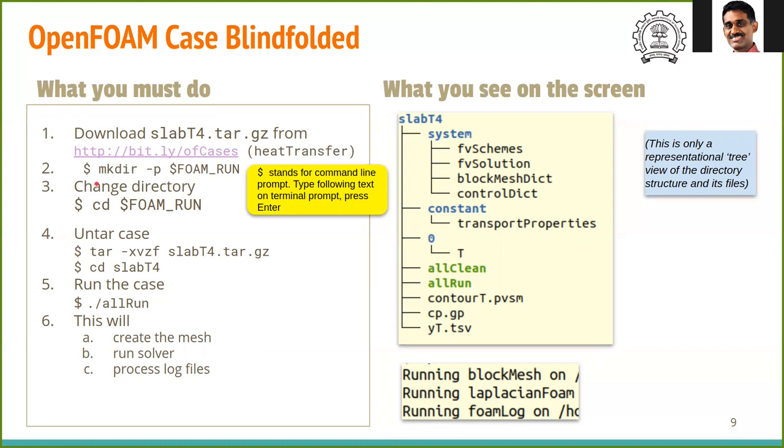Then change the working directory. Untar the case file you just downloaded using the command tar -xvzf slabT4.tar.gz. This will create all the required directories and the files from the gzip file.